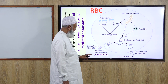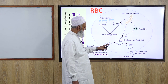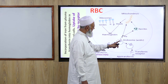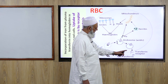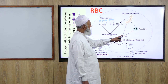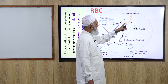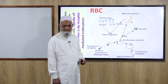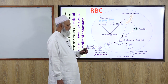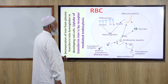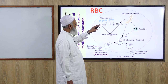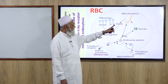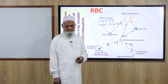The transferrin receptor, along with diferric transferrin carrying ferrous iron, undergoes endocytosis. This endocytic vesicle or endosome then releases iron, and the transferrin receptor returns to the cell membrane. Iron is then used by the mitochondria to form heme, and excess iron is stored as ferritin in the liver and plasma. Ribosomes form alpha and beta-globin chains, which combine with heme to form hemoglobin.